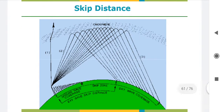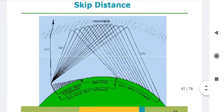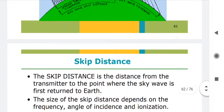This picture illustrates skip distance. From the transmitter, a number of waves are transmitted to the ionosphere and reflected back to earth. The first wave to reach the ground defines the skip distance — before that point there is no communication via ionospheric propagation. Only after that point do the other reflected waves reach the ground surface. This region with no communication is clearly the skip distance or skip zone.